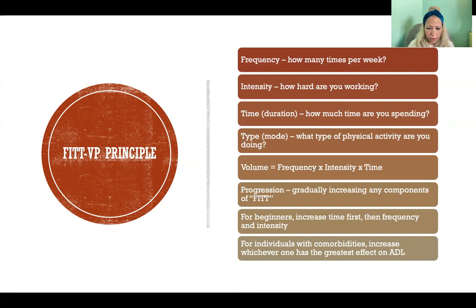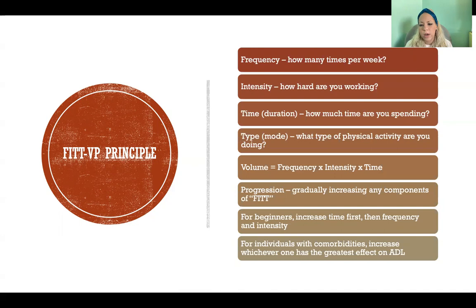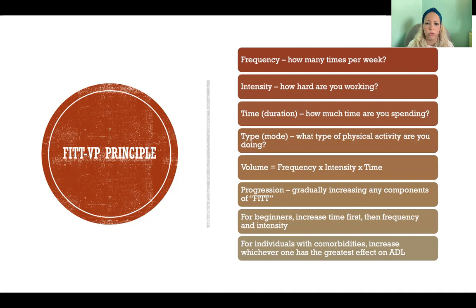For beginners, we would generally increase time first — increasing duration gradually — and then start working on increasing frequency and/or intensity. For individuals who have comorbidities — chronic diseases, disabilities, or anything where activities of daily living are impaired — you would increase whichever variable is going to help them achieve their specific goal sooner.